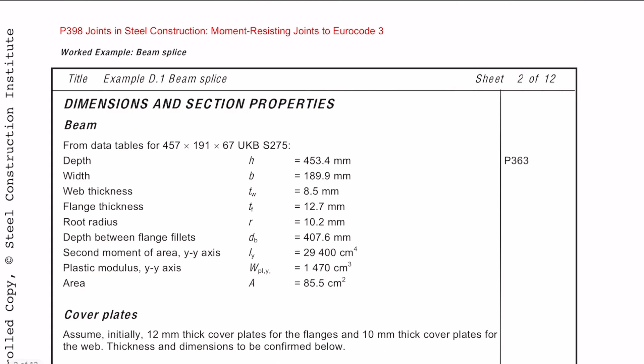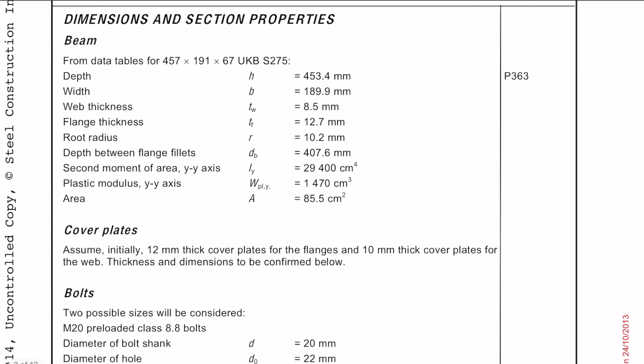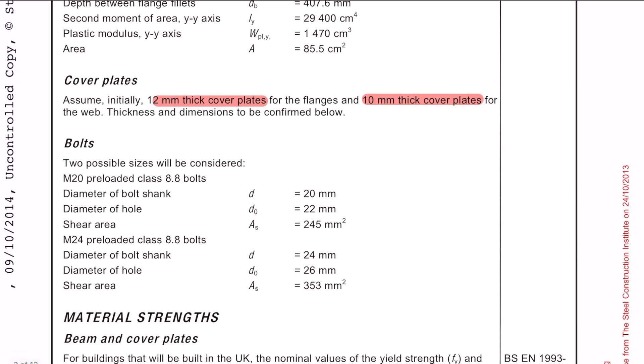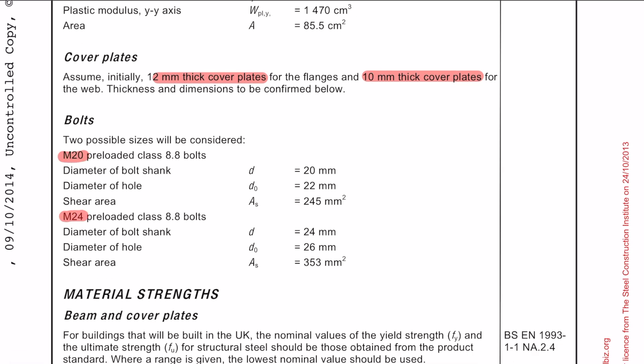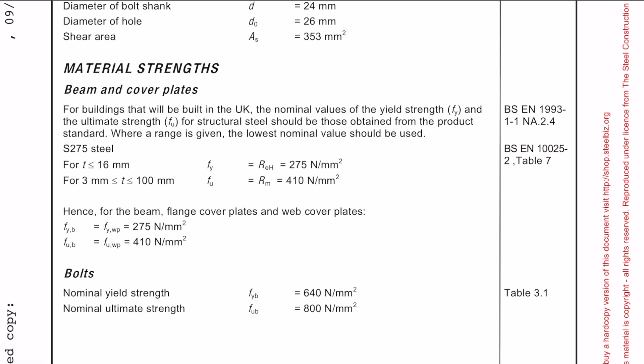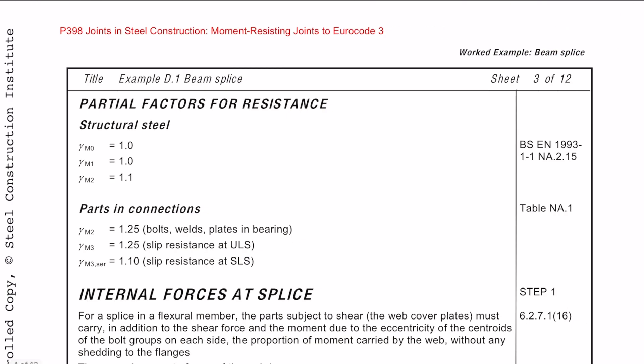So the first thing to do is to list out the data for your beams, plates, bolts and material safety factors. We're going to assume a 12mm thick cover plate for the flanges and a 10mm thick cover plate for the web. We'll be considering two sizes of bolts, M20s and M24s. The yield strength for the plates and the bolts are from the Eurocode's national annex. And likewise the material safety factors for structural steel and connections.